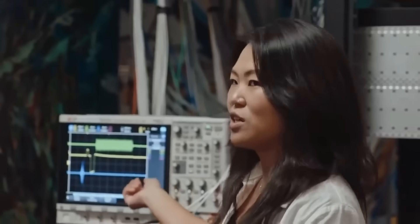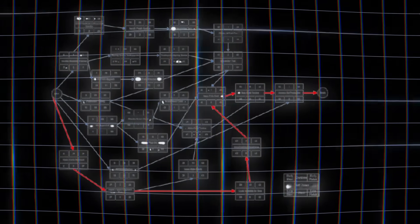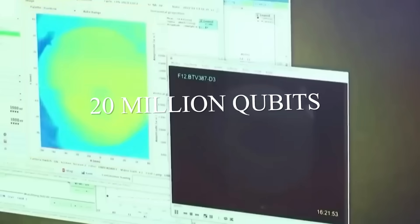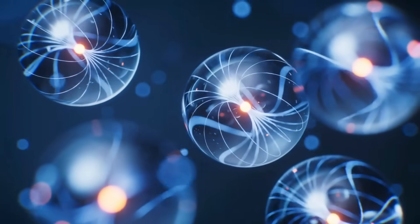But here's the bombshell. Researchers have slashed the resources needed to break RSA 2048, the backbone of internet security, by 20 times in just a few years. What once required 20 million qubits can now be done with less than a million. And that number keeps dropping every time a new paper is published.